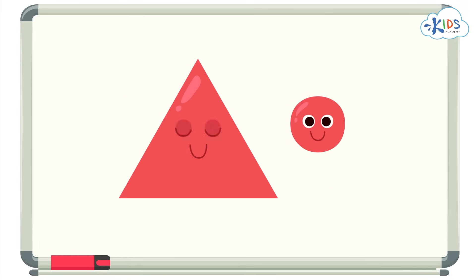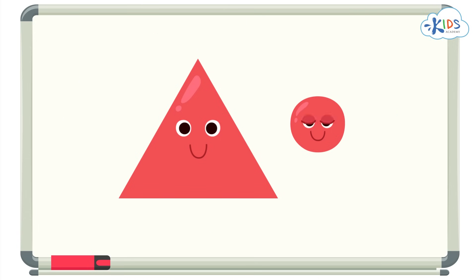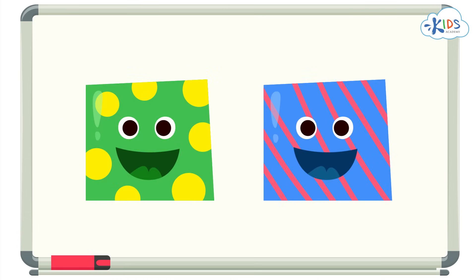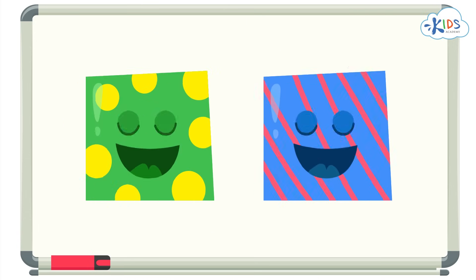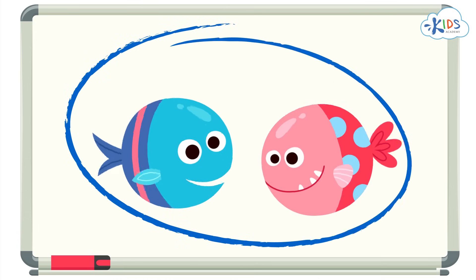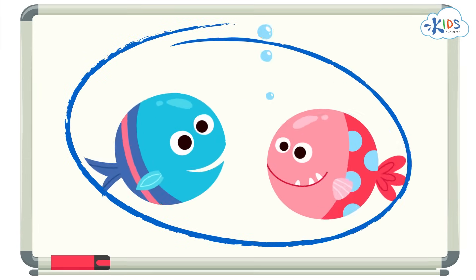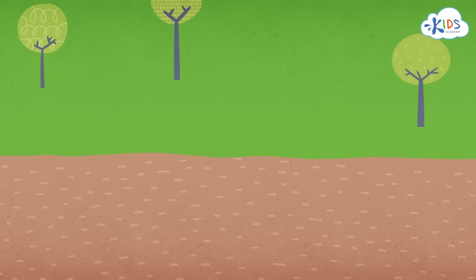We can group objects together that are the same, like objects that have the same color or shape or size. Today, we're going to talk about sorting objects by size.